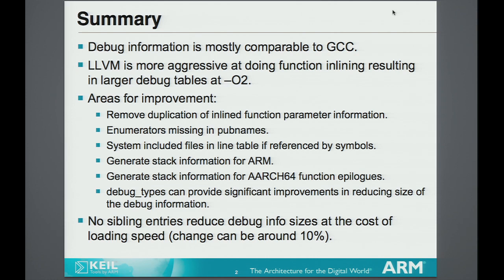The other thing is sibling entries, which is a means of skipping symbols in the DWARF. LLVM doesn't generate them deliberately. They have a cost in performance of about 10% when you're loading, but they can cost you about 10% in space. So which do you want — speed or size?